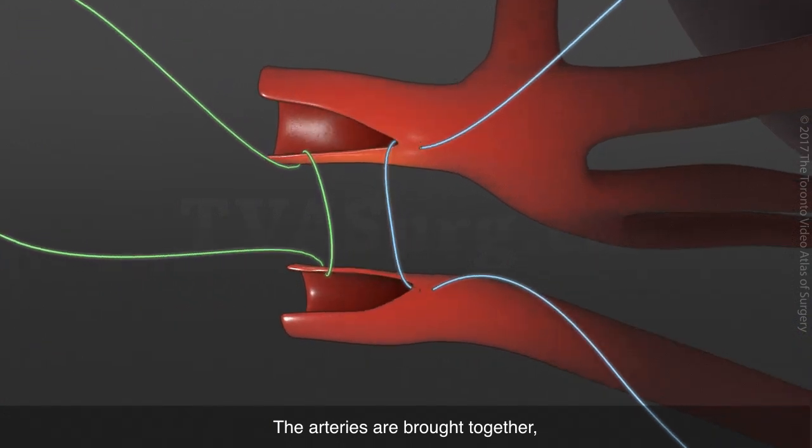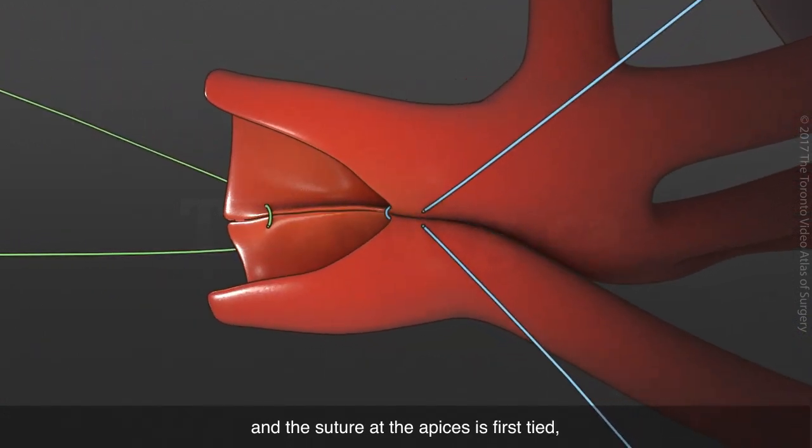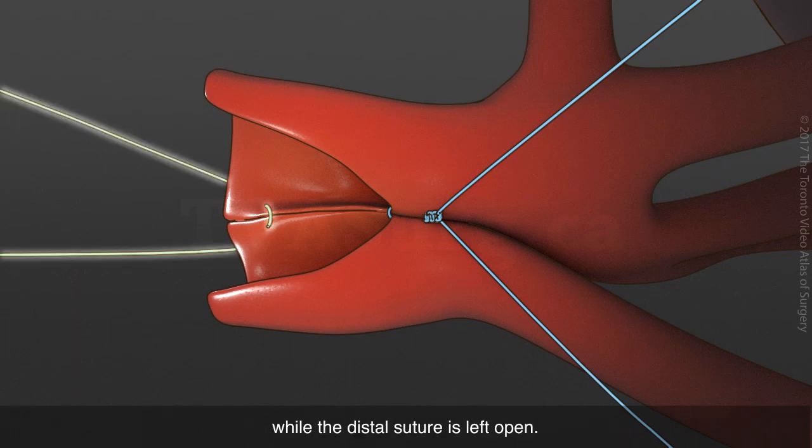The arteries are brought together, and the suture at the apices is first tied, while the distal suture is left open.